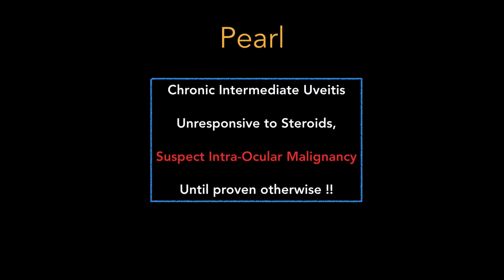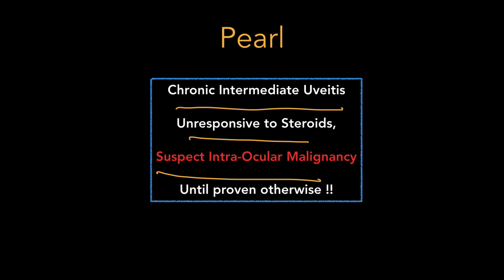So what is the pearl? The pearl is very clear: in any chronic intermediate uveitis which is not responding to steroids, suspect intraocular malignancy until proven otherwise. This is the most important pearl from this case. Thank you so much for listening. Stay connected.